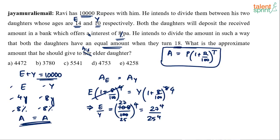The total amount is 10,000 rupees — divide it in this ratio. But 27 to the power 4 and 25 to the power 4 are time-consuming to calculate. However, from this ratio it is obvious that the elder daughter's share is greater than the younger daughter's share, because 27 to the power 4 is greater than 25 to the power 4, so E is greater than Y.